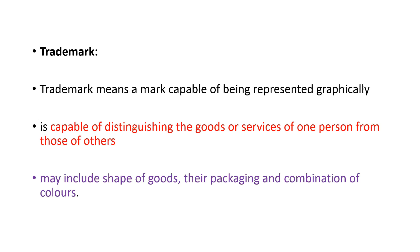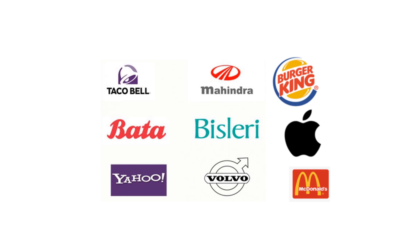A trademark is capable of distinguishing the goods or services of one person from those of others, and may include the shape of goods, packaging, or combination of colors. Examples of trademarks include Bata's logo, Pisleri, and the Apple symbol — seeing the Apple logo itself, one understands it is Apple; the same way with the Mahindra logo. That concludes today's topic covering patent, copyright, and trademark — three important types of intellectual property rights.